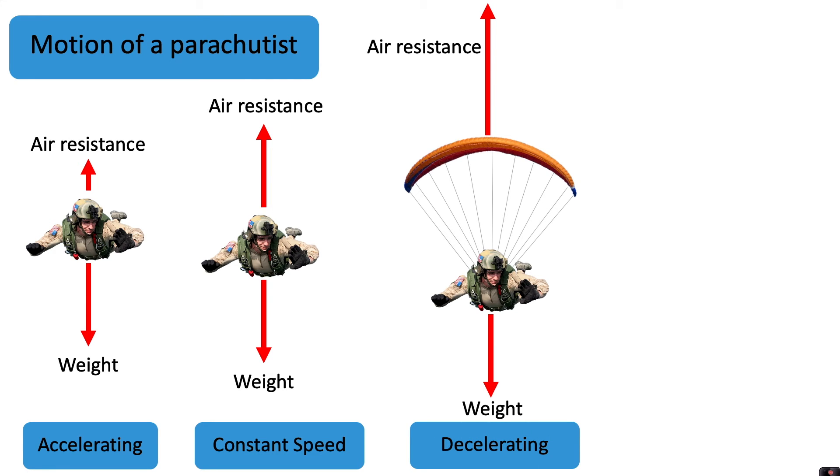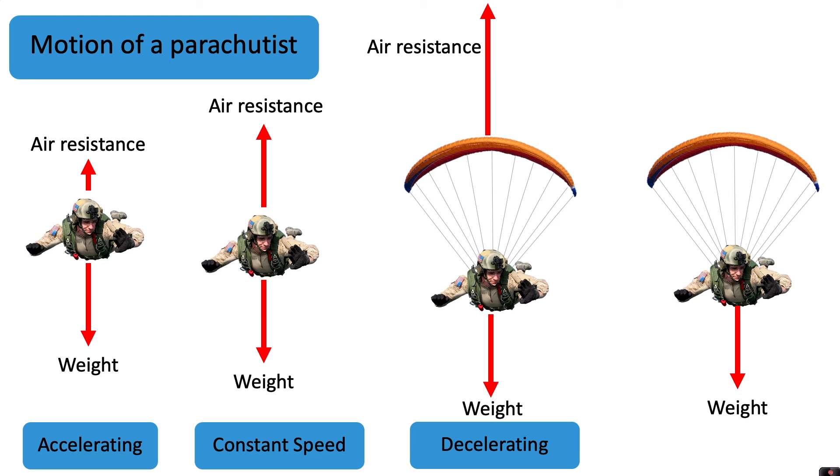And finally, as his speed decreases with his parachute, so will the air resistance. So he will eventually again have balanced forces and be travelling at a different and slower constant speed until he eventually lands on the ground.